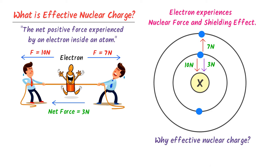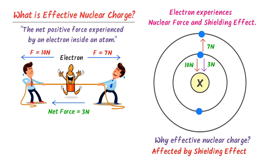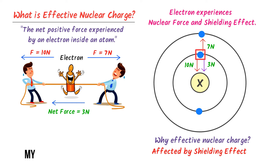Why do we call it effective nuclear charge? It is because the net force is affected by the shielding effect. For example, this electron experiences nuclear force of 10N in this direction, while at the same time this electron experiences shielding effect of 7N force in this direction, so the net force is also affected by the shielding effect. That's why we call it effective nuclear charge.